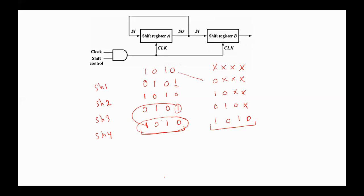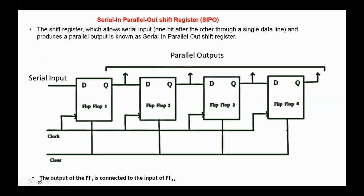Serial transmission has limited applications since it's slower than parallel transmission. The next type of shift registers is the serial-in parallel-out shift register. The shift register which allows serial input one bit after the other through a single data line and produces a parallel output is known as a serial-in parallel-out shift register. The output of flip-flop I is connected to the input of flip-flop I+1.